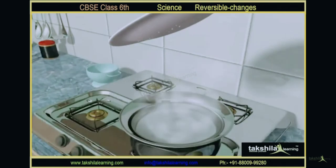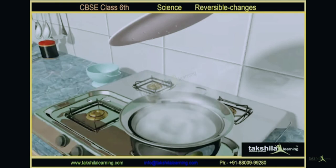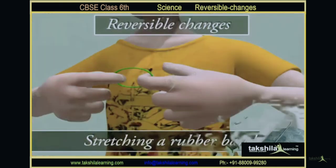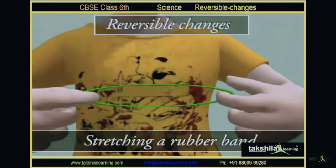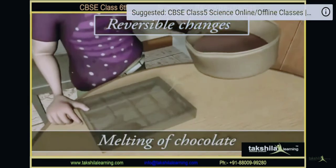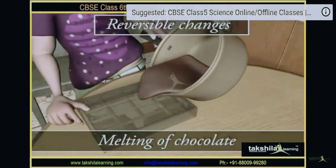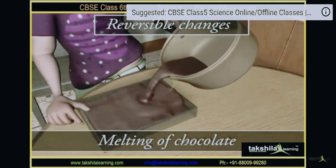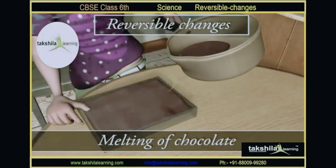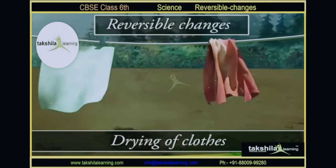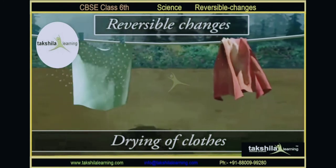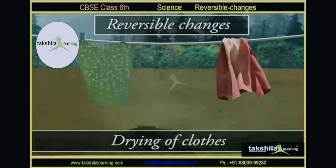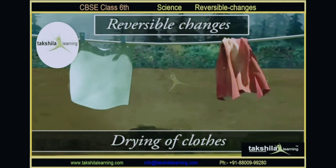If you collect all the vapors somewhere and they cool down, they will come back in the form of water droplets — that is a reversible change. Stretching of a rubber band: if you leave it, it comes back to its original position. Melting of chocolate — if you pour it into a tray, it will take its shape again. Drying of cloth is also one example of a reversible change.